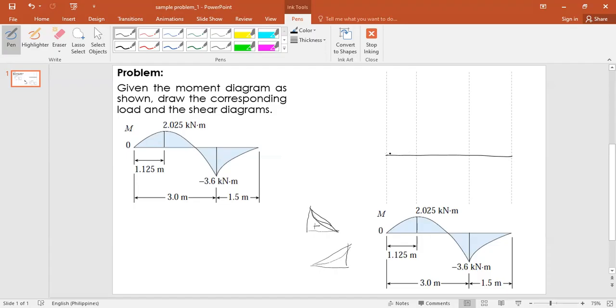So your moment diagram is concave upward. If the moment is concave downward, then that's the shear diagram. Now if the moment is maximum, it means that the shear is zero. So most likely the shear diagram is this one.